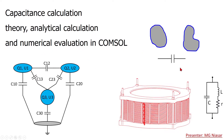In the first video, which is this video, I will cover capacitance calculation between two conductors. In the second video, we will see how to calculate a matrix of capacitances when we have multiple conductors. And in the third video, we will see how to calculate capacitance of a coil, like self-capacitance of a coil, and also capacitance of a disc of a coil and similar things.